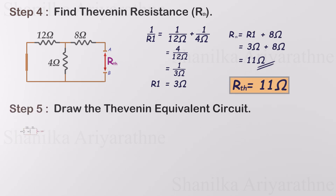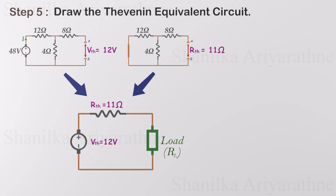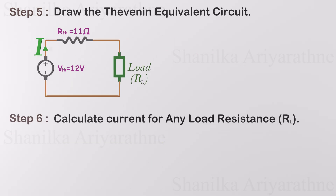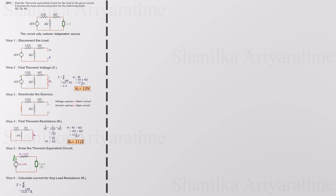Now that we've found the Thevenin voltage and Thevenin resistance, we can move on to the next step. Let's draw the Thevenin equivalent circuit. To finalize the Thevenin's theorem process, let's calculate the current for a load with resistance R. Using the simplified Thevenin equivalent circuit, we can easily calculate the current through the load using Ohm's law. It may seem like a lot of work initially, but once you're familiar with the process, you'll be able to reduce the number of steps and solve circuits quickly and efficiently.